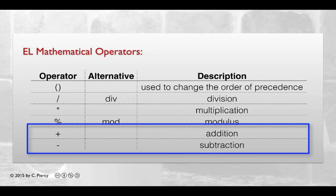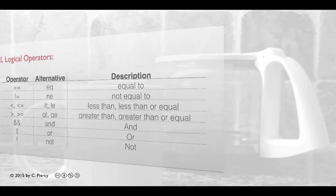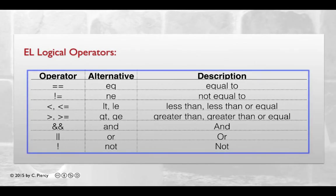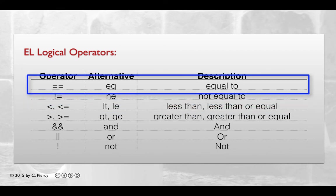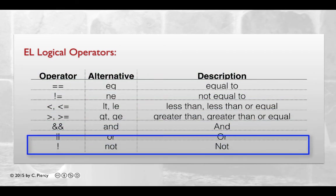Similarly, addition and subtraction also share precedence level. Here are the expression language logical operators. They should look familiar to you as Java programmers. Double equal sign for equals through the not operator.